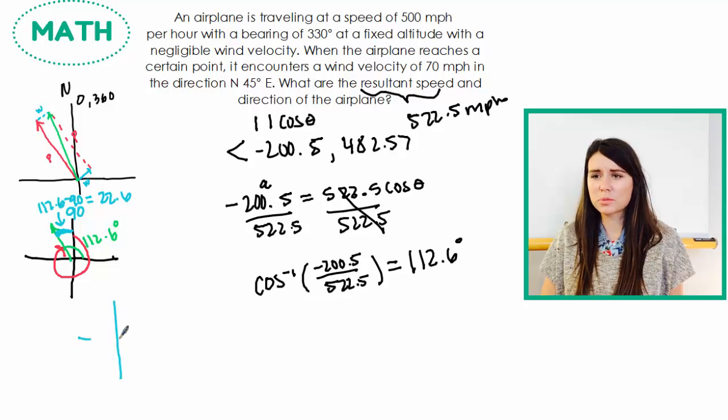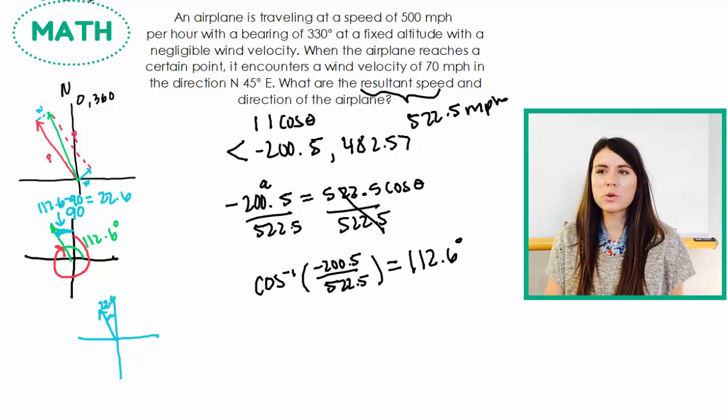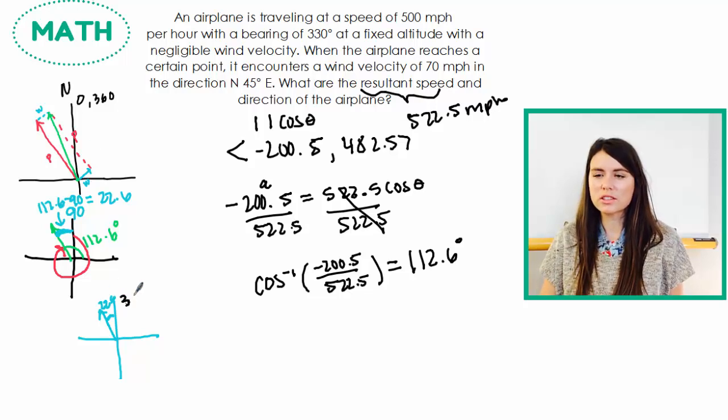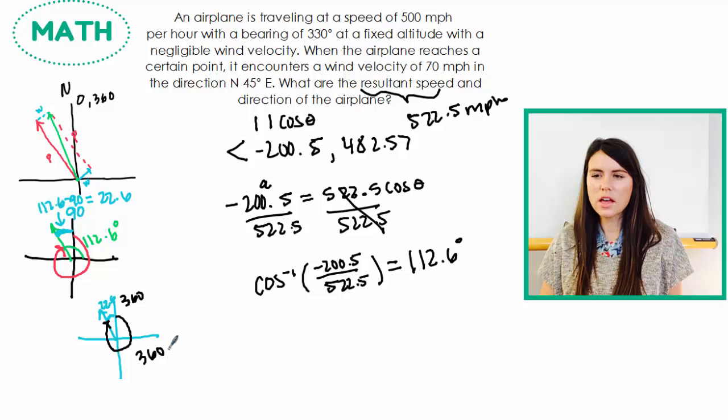Now I'm going to draw this again, just because I think that's helpful. So if I know that this piece right here is 22.6, and I know that on my northeast-southwest, this is 360. I know that from here all the way around to here is going to be 360 minus 22.6. So I know that I am traveling at a bearing of 337.4 degrees.